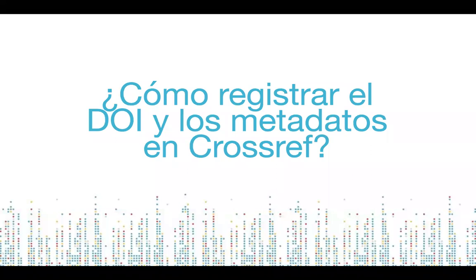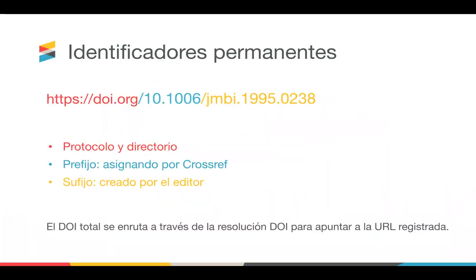Hay varias formas de registrar contenido. Use su prefijo para crear un DOI para cada elemento de contenido. Un DOI contiene tres secciones: la sección en rojo es el protocolo y directorio; la sección en azul es el prefijo, que damos a cada miembro en formato 10 seguido de 5 números. Los prefijos originales comenzaron con 4 dígitos, pero han sido de 5 dígitos desde 2012.